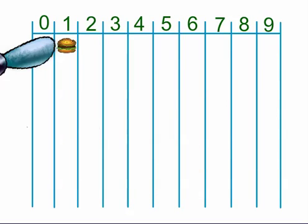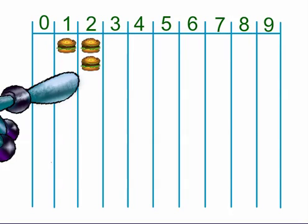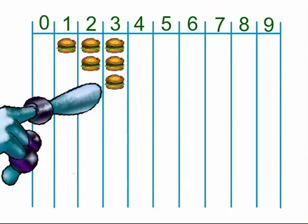The next column would be one hamburger. If we add one more hamburger, we end up with two. And if we add another hamburger, we end up with three.